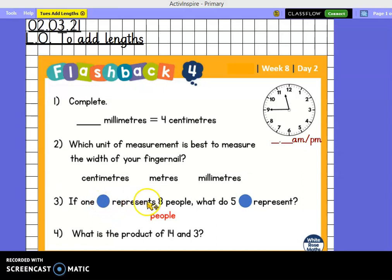If one blue circle represents eight people, what do five blue circles represent? How many people? And number four, what is the product of fourteen and three? Product means when you multiply them together. Then you've got the time to do. Pause the video while you have a go.